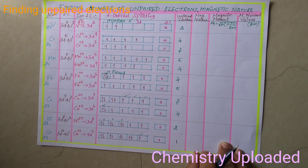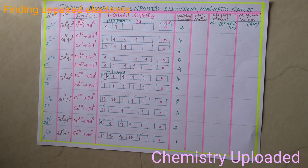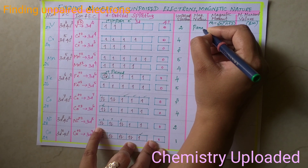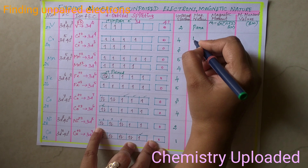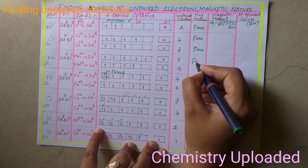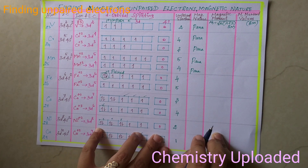Next, magnetic nature. There are 2 types: paramagnetic and diamagnetic. Paramagnetic means the ion has unpaired electrons and is attracted by a magnetic field. Diamagnetic means all electrons are paired and is not attracted by a magnetic field. All the ions here are paramagnetic because they have unpaired electrons. Paramagnetic ions show magnetic moment values.